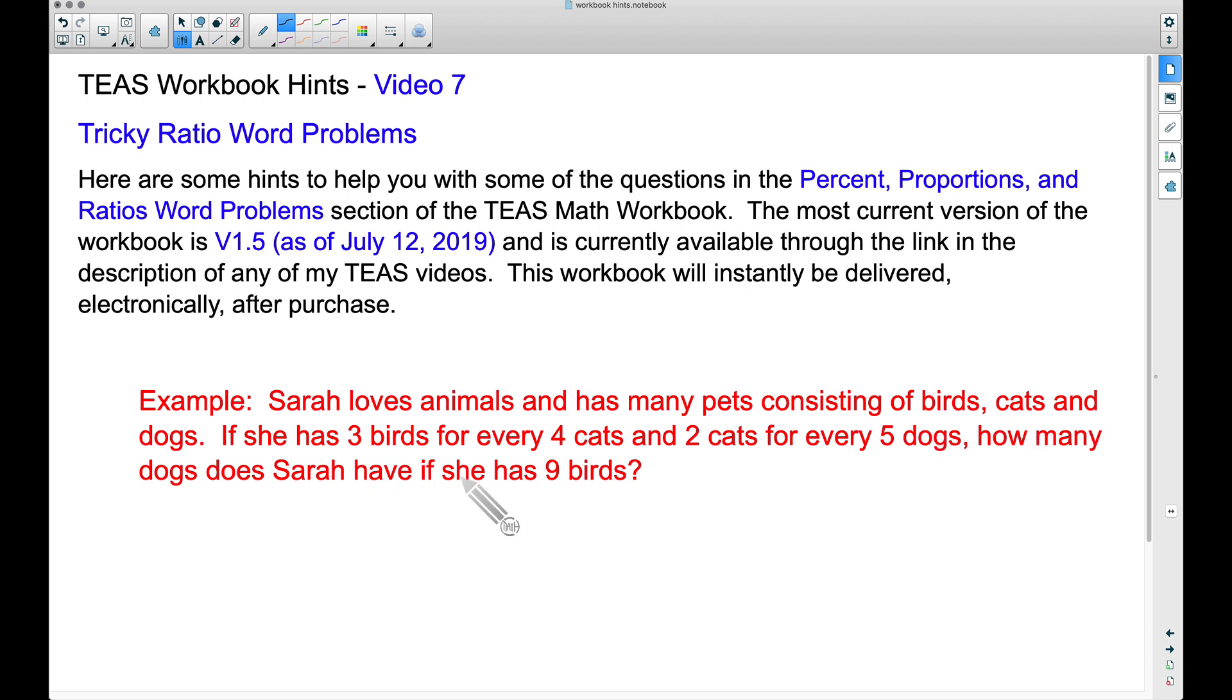Now I'm going to show you a visual representation first, and then we can look at a way of just dealing with numbers and maybe some fractions or something like that. So she has three birds for every four cats.